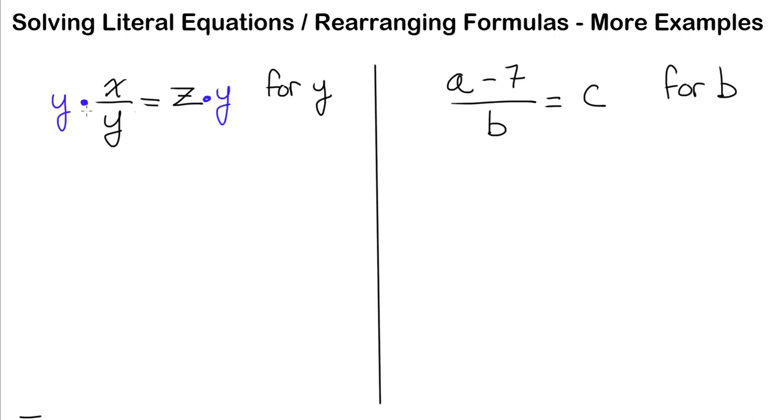That looks like this. Over here, y divided by y cancels out, leaving me with x. On the right side, I have z times y, which is zy or yz. I'm going to leave it as zy because like that, you can very easily see what our final step is.